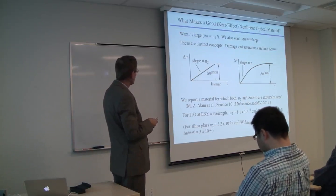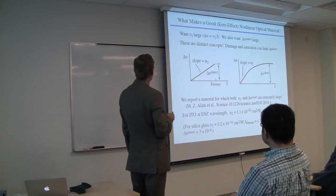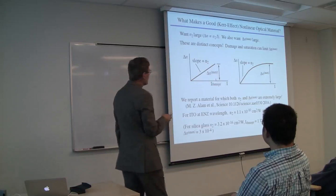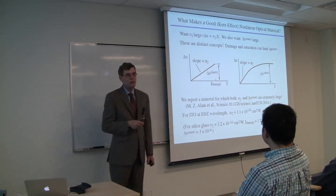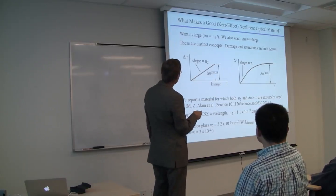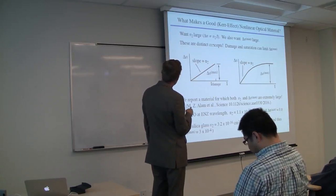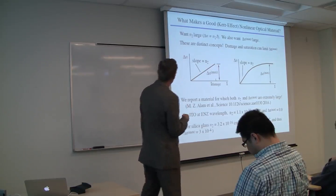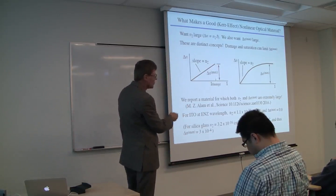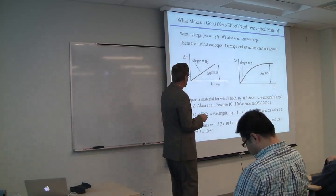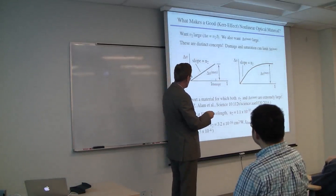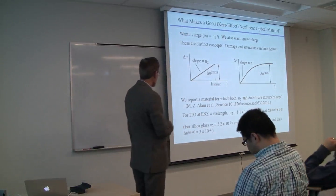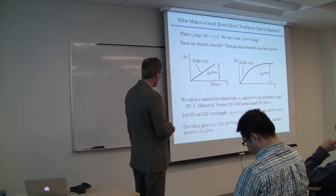What makes a good Kerr effect nonlinear optical material? First, you want a large value of N2 because delta N equals N2 times I. That means you can use a small intensity to get a big change in refractive index. But there's another metric: you want the maximum change in refractive index to also be large. These are distinct concepts because this scaling law does not go on forever. Damage and saturation can limit this. In our material, both of these are very large.